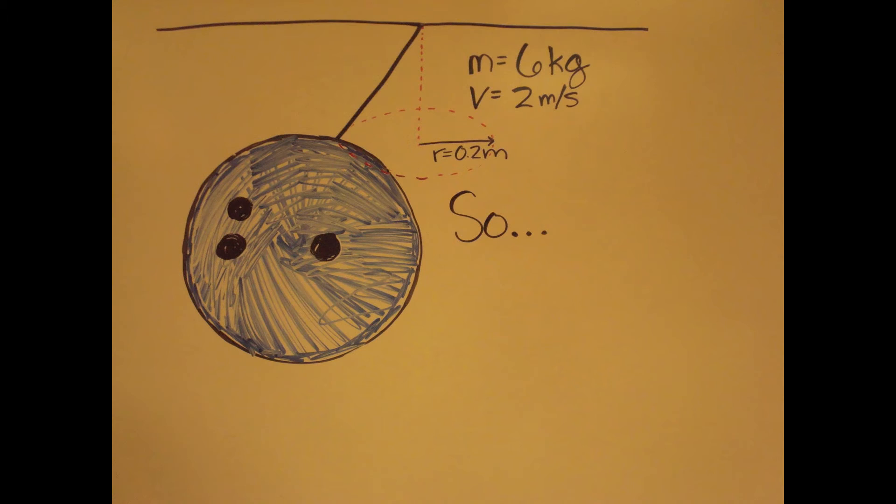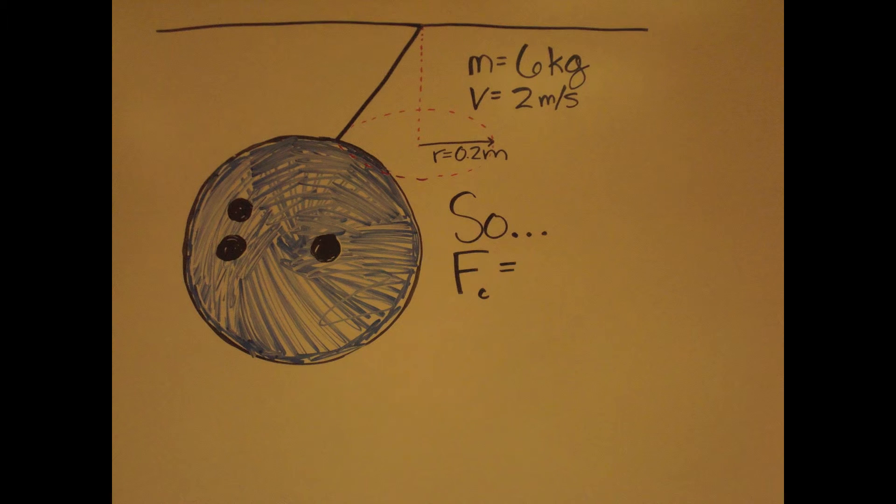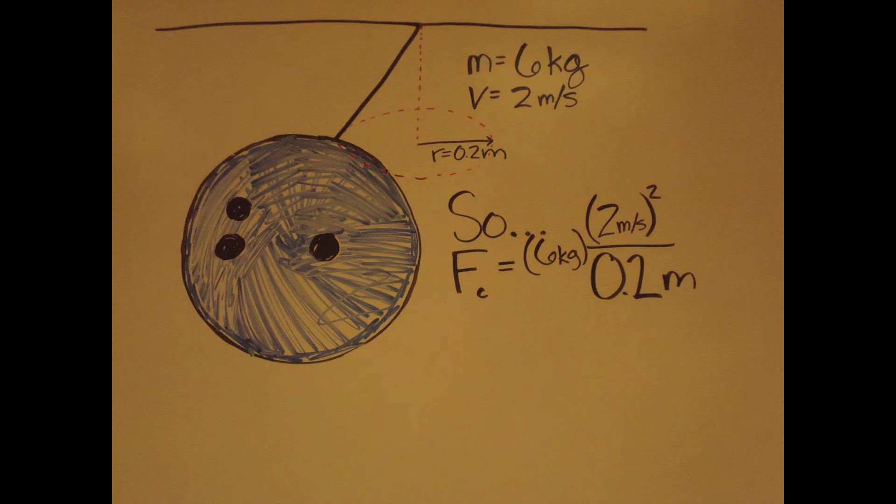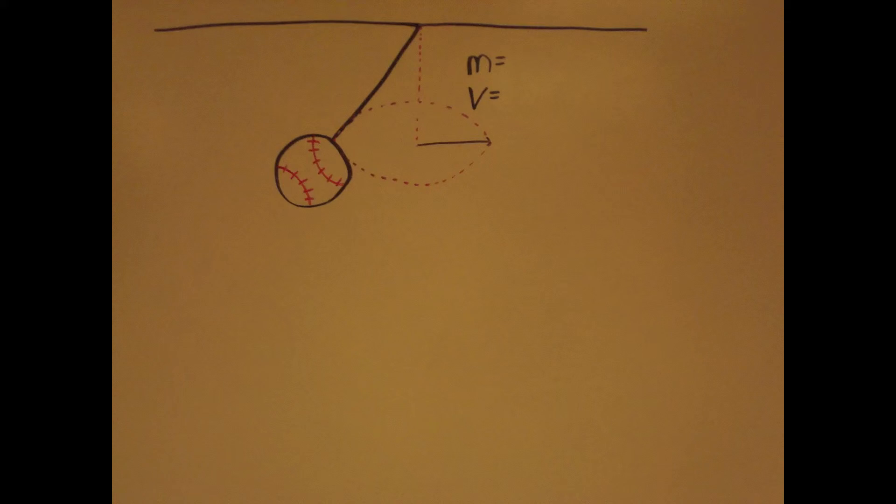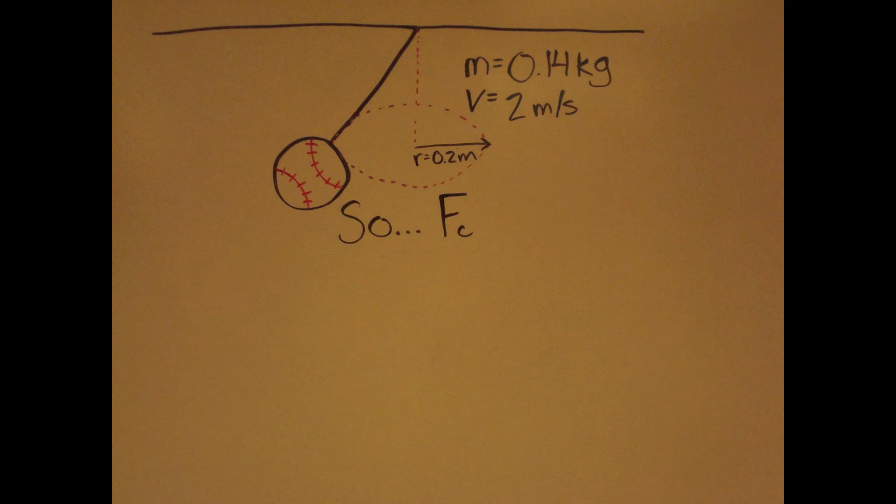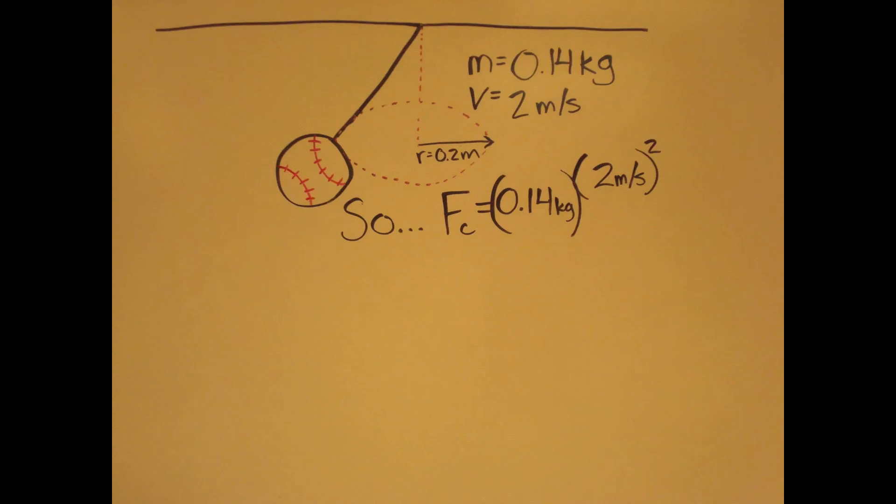To find the centripetal force of a bowling ball, multiply its mass times velocity squared and divide by the radius of the circular path. Follow the same process for a baseball: mass times velocity squared divided by the radius of the circular path.